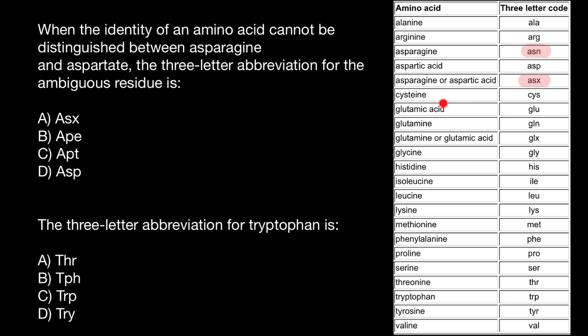Next in the table is glycine, whose three-letter abbreviation is just the first three letters. But glutamic acid and glutamine are next, and their first three letters are the same. Again, glutamic acid consists of two words, so two words beat the one-word amino acid. The first three letters of glutamic acid are GLU, and for glutamine it is GLN.